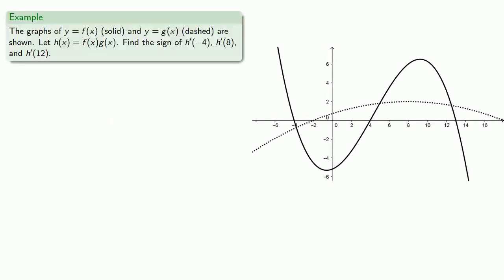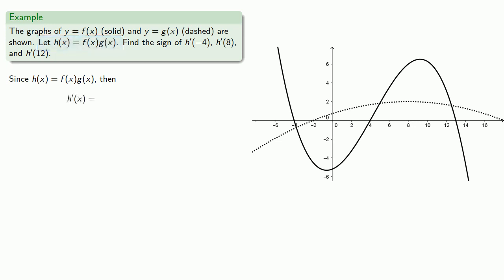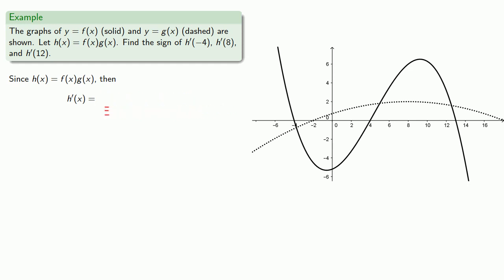So for example, let's say we have two graphs but are interested in the derivative of their product function. Since h of x equals f of x times g of x, we can use our product rule to find an expression for the derivative. And if we want to find the derivative at negative 4, we can substitute in those values.